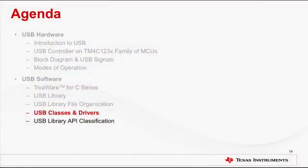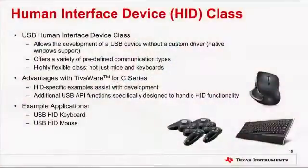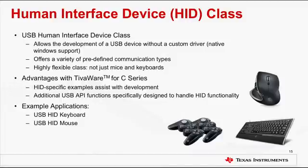Now let's take a look at the different USB classes. The USB Human Interface Device class is part of the USB specification for human interface devices such as keyboards, mice, game controllers, and alphanumeric displays. The USB HID class is defined in documents provided by the USB Implementers Forum's device working group, primarily the device class definition for HID 1.11. This class allows development of a USB device without a custom driver for native Windows support. Many pre-defined functions exist in the USB HID class, allowing hardware manufacturers to design a product that works with any software meeting these specifications.